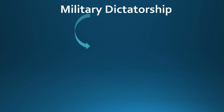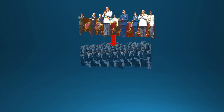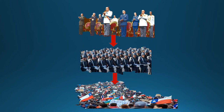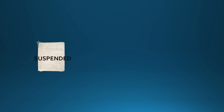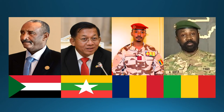A military dictatorship is a form of dictatorship in which a leading military officer rules a nation in cooperation with other leading military officers. The dictator is usually a leading general who forms a government with other officers called a junta, which uses the rest of the military to exert control over the populace. When military dictatorships come to power, they typically suspend the nation's constitution or implement a never-ending state of emergency or martial law to retain power. Current examples include Sudan, Myanmar, Chad, and Mali.